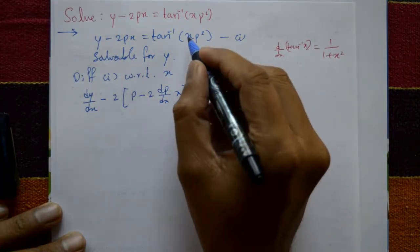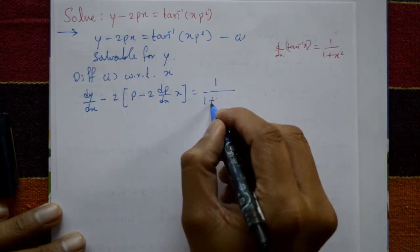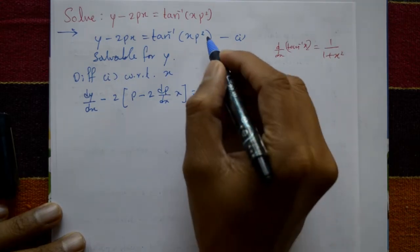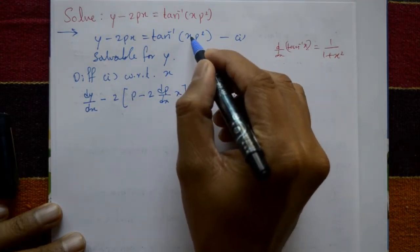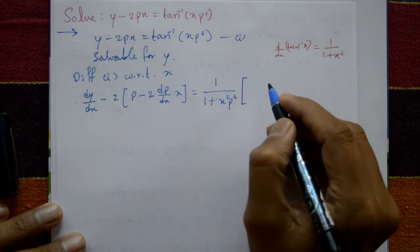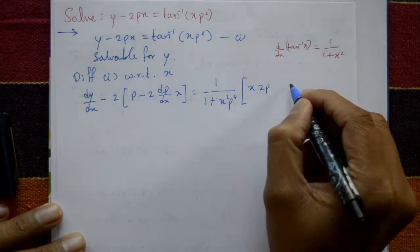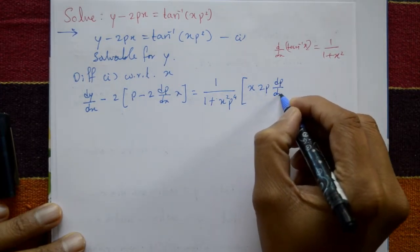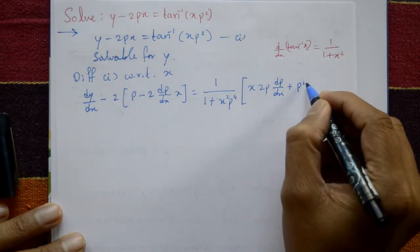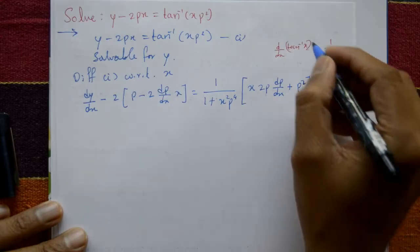The differentiation of tan inverse of x is 1 upon 1 plus x squared. Here the argument is xp squared, so the denominator becomes 1 plus x squared p raised to 4. Using the product rule on xp squared: x as it is, differentiate p squared gives 2p dp/dx, plus differentiate x gives 1, so p squared remains.